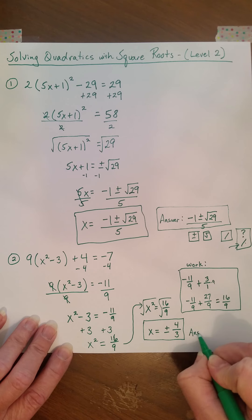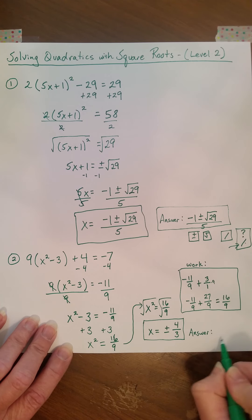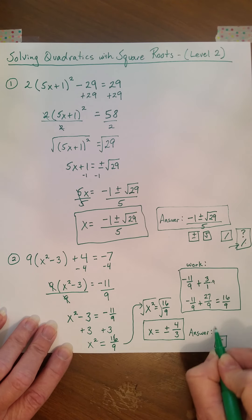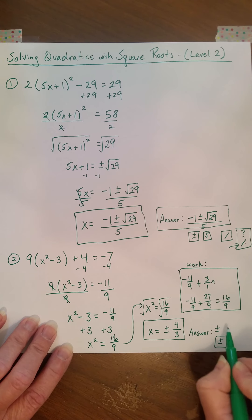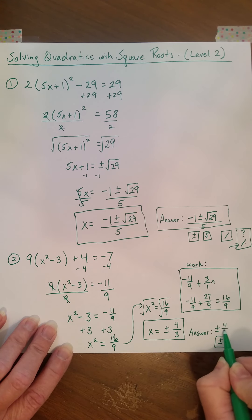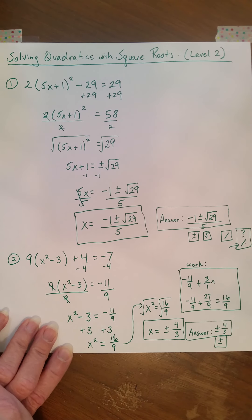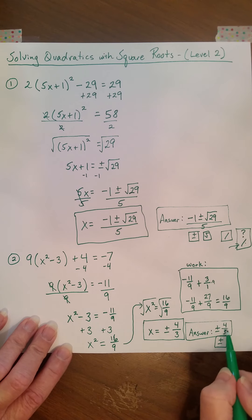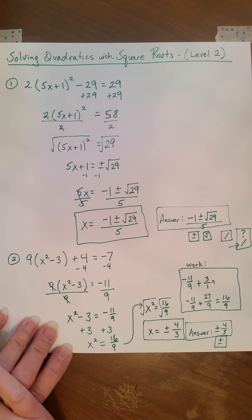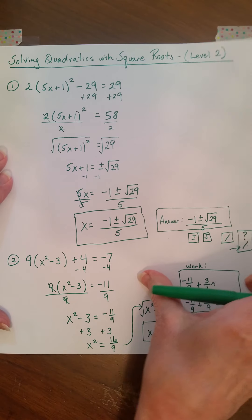So when I submit my answer, you're going to hit the plus or minus option, and then you're going to put in 4, hit the divide-by key, and it'll give you the 4 thirds. That's your answer. I would just leave it as an improper fraction — plus or minus 4 thirds. Okay, we're going to do two more.